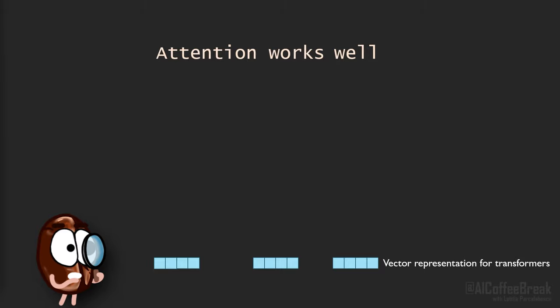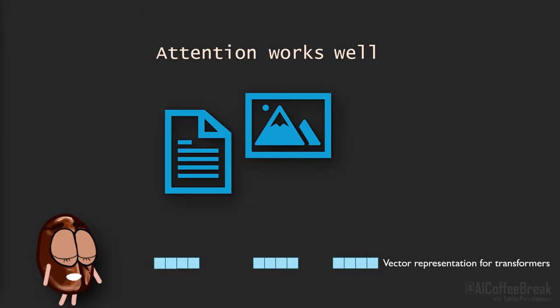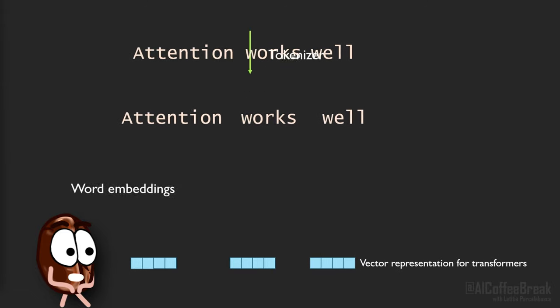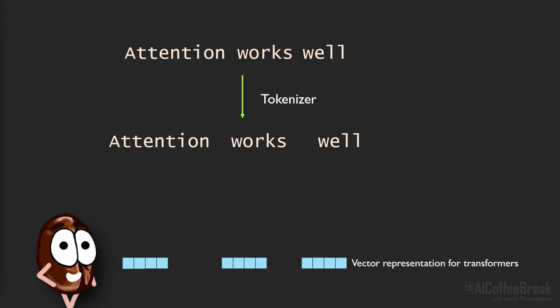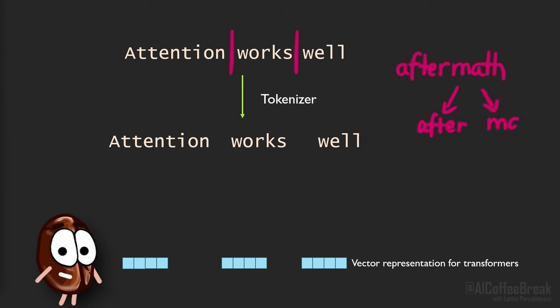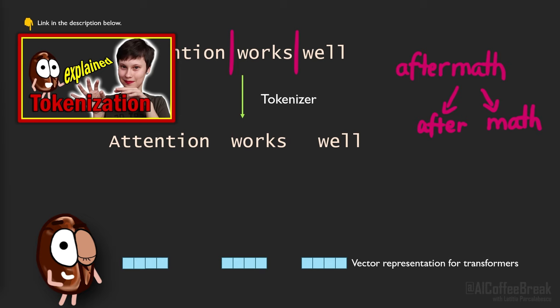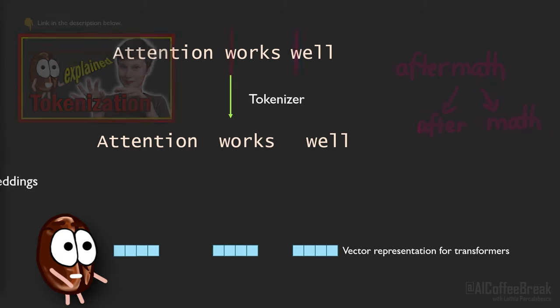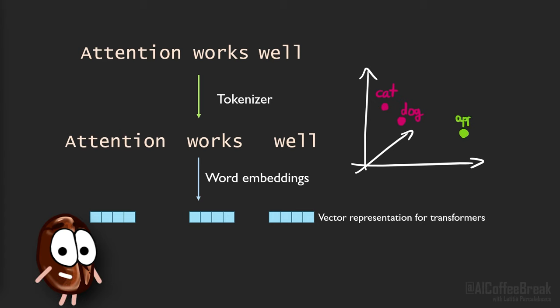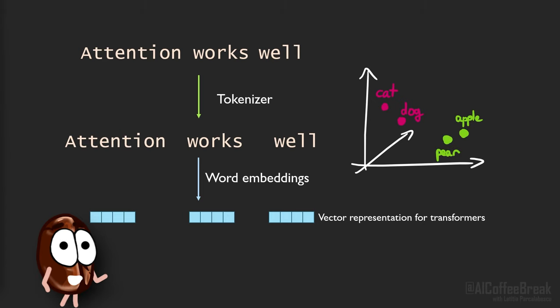Let's look at two examples: text and images. For text, we do the so-called tokenization, where we take a sequence of words and decompose it with the tokenizer into subwords from a predefined vocabulary — for example by following white spaces and breaking down compound words into their components. If you want to know more about tokenization, check out our previous video on this. Then the subwords all get assigned a unique vector.